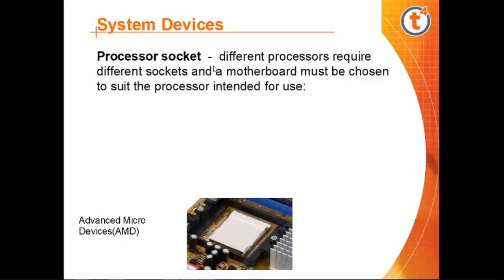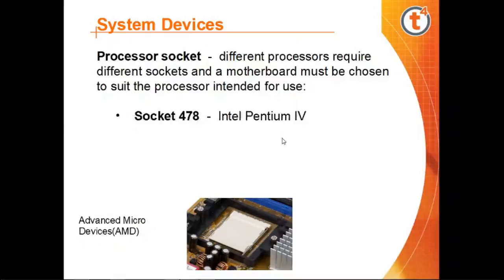The processor socket makes the connection between the processor and other output devices. Internally, it connects the processor with other devices. Different processors require different sockets, and the motherboard must be chosen to suit the intended processor. For example, socket 478 is for the Intel Pentium 4.